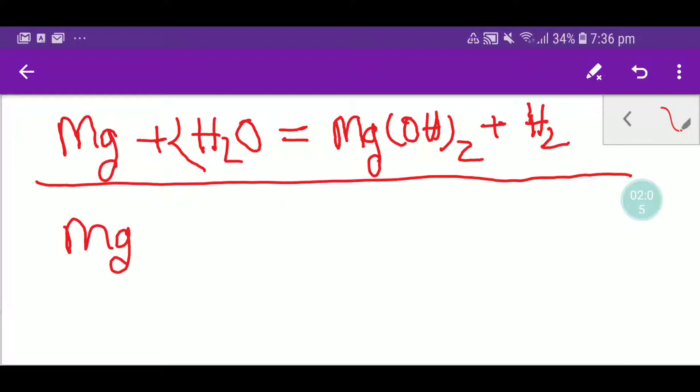So to do so, we have to write the water like HOH, and we know that magnesium will release two electrons, that is magnesium will be two plus here, and hydroxyl ion always have one minus charge.